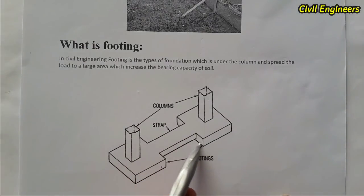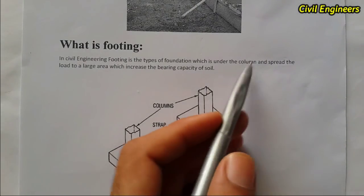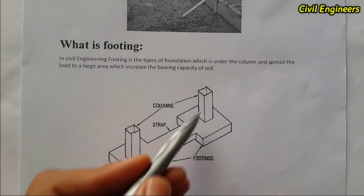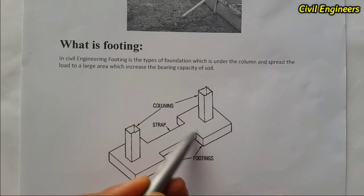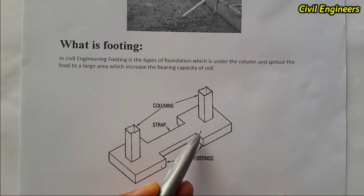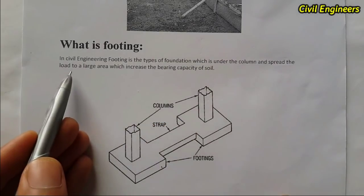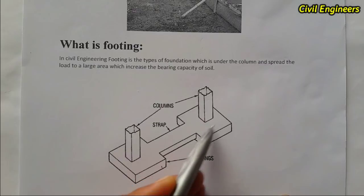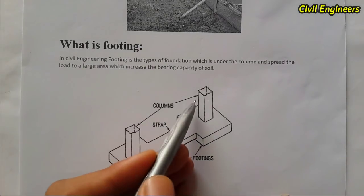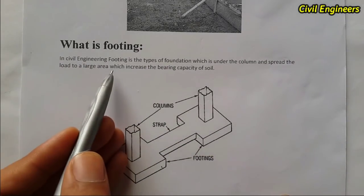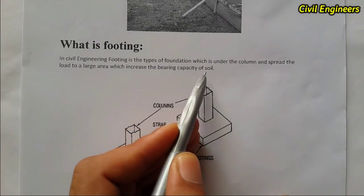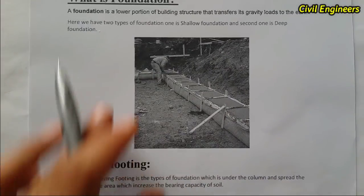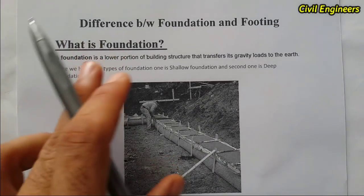So this is the column, and the footing is under the column. The footing spreads the load of the column over a large area. This large area increases the bearing capacity of the soil. So that is the key difference between foundation and footing.